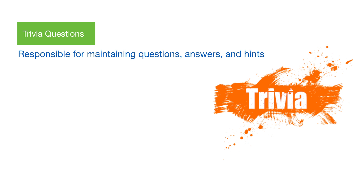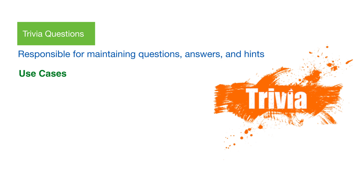Our TriviaQuestions microservice will handle the trivia questions for our game. Let's list out some of the use cases we'll need for our microservice. The use cases matter because they describe the API we need to create. For starters, we'll need to get a question — this could be a particular question or maybe we'll need a random question. We'll do both. We could expand this to get questions from a category or other more complex use cases, but we'll keep things simple for now.